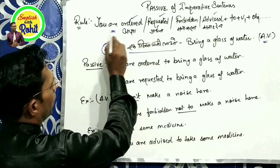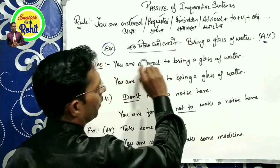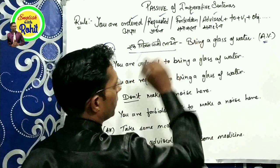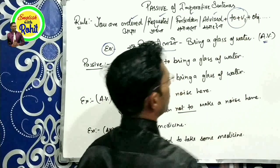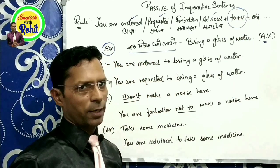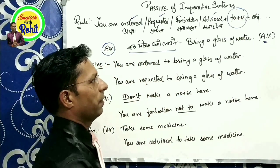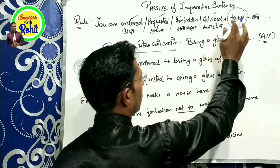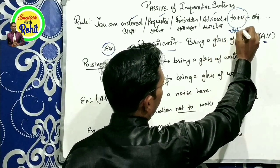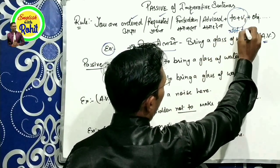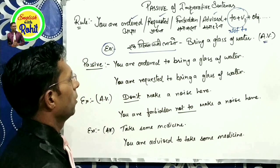To make Passive Voice, we use one of these four forms: 'You are Ordered,' 'You are Requested,' 'You are Forbidden,' or 'You are Advised,' followed by 'To + the First Form of the Verb.' This applies when the sentence is Affirmative. If the sentence is Negative, then 'Not To + First Form of the Verb' is used.